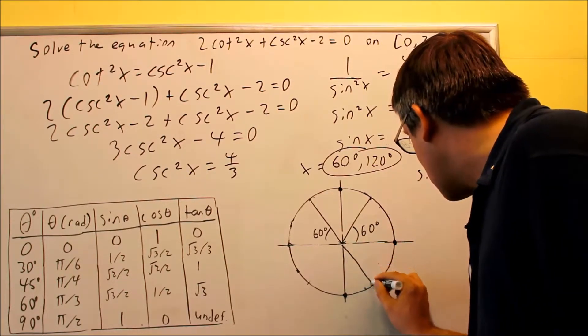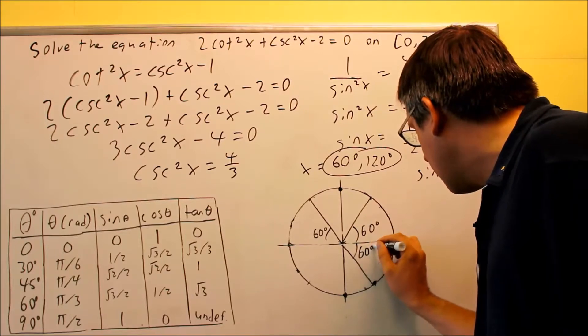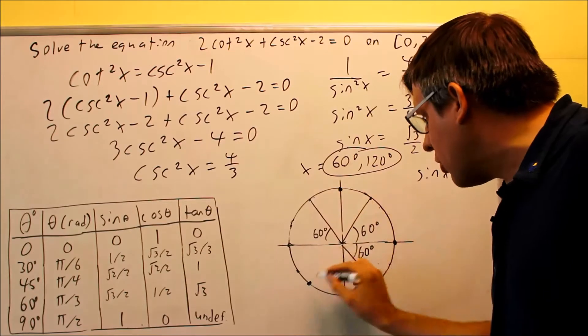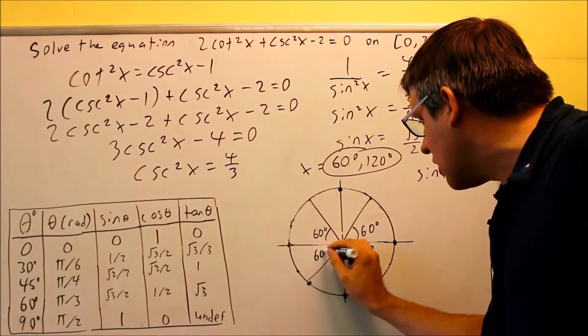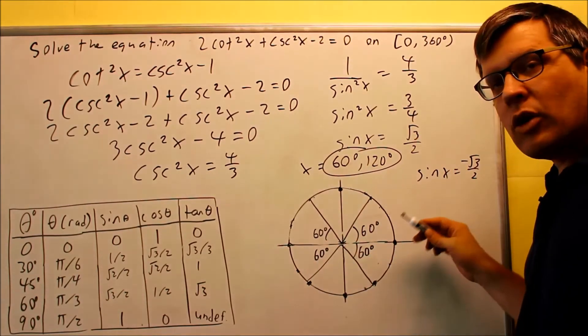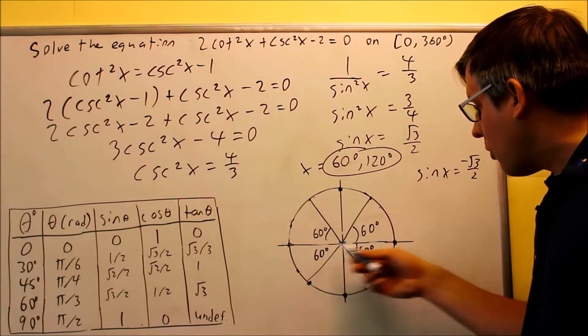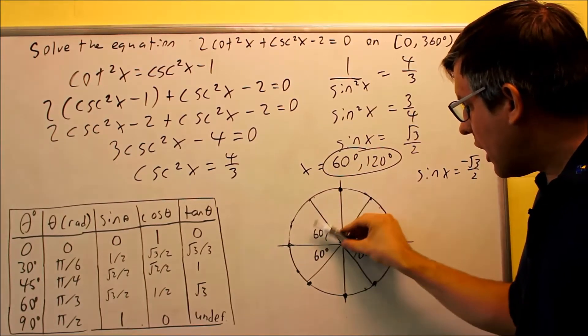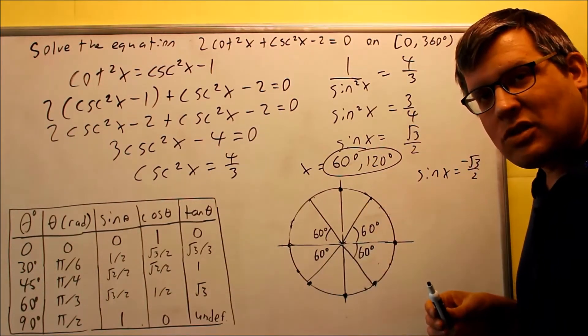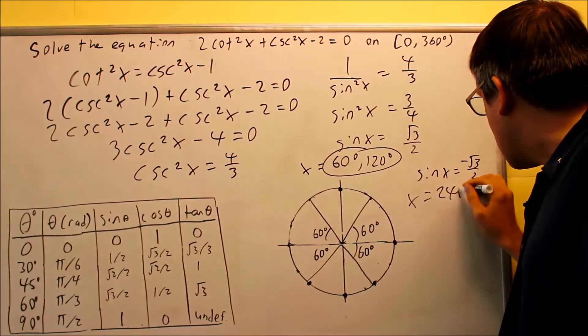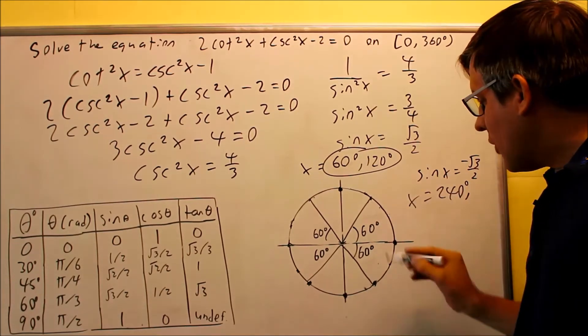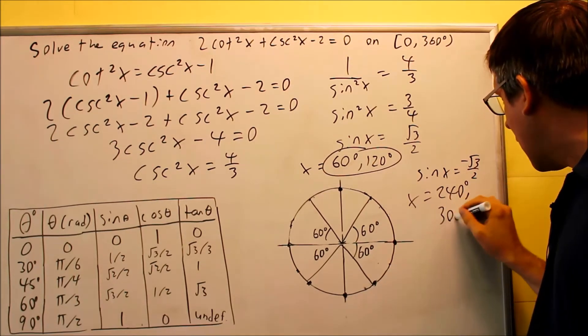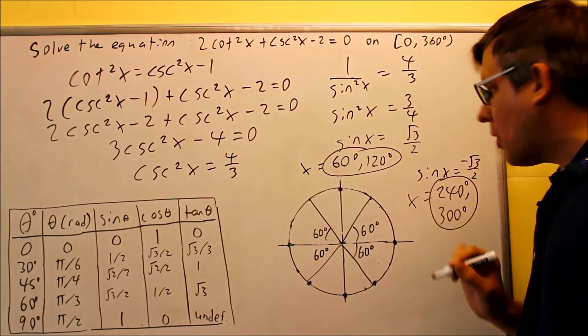My reference angle is still the same, I'm still working with 60 degrees there and then again this one over here is going to have another answer right below it too. This is also going to be 60 degrees. I want to write the angle for both of these. I have 180, I did minus 60 and got 120 but now I'm going to take 180 plus 60 gives us 240. Here's another answer 240 degrees. Then I want to do this one 360 minus 60 is 300. I have these two are going to be my other two solutions.